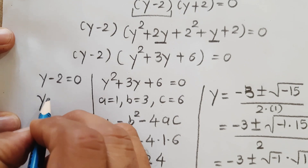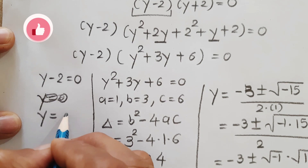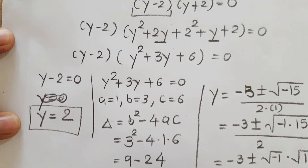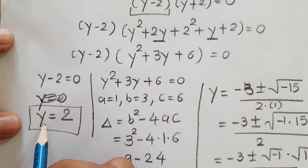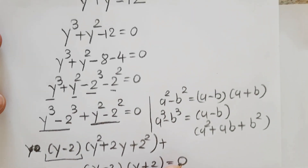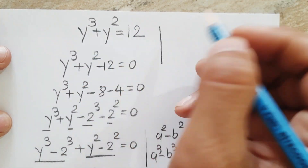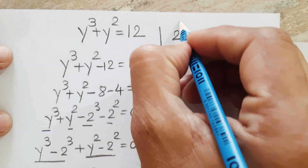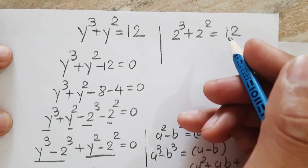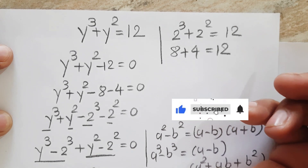We also had the factor (y - 2) = 0, which gives y = 2. Let's verify: substituting y = 2 into the original equation, y³ + y² = 2³ + 2² = 8 + 4 = 12. This confirms y = 2 is correct.